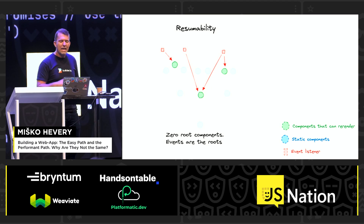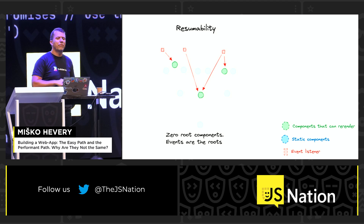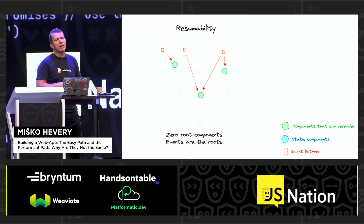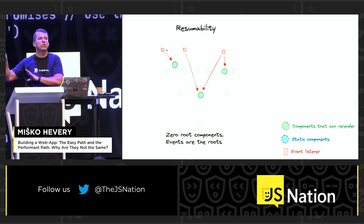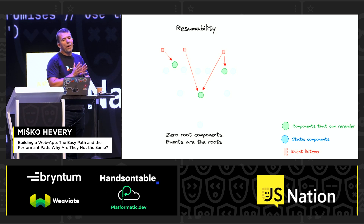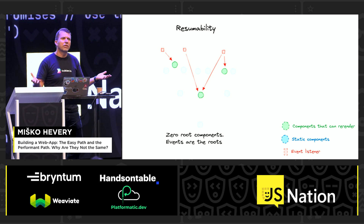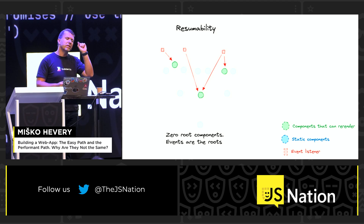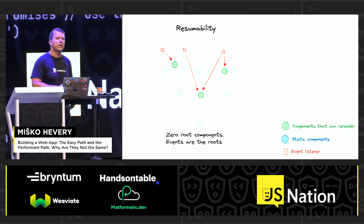This is the bit we call resumability. In the resumable world, instead of starting at the root component and finding all the listeners, you flip it all around and say: you start at the listeners. It's the listeners that matter. Because if there is no listener, then that component is inert — you can't really do anything with it. In this particular example, if I click on this component, I see that only this particular component needs to be re-rendered. The rest of the page doesn't even have to be downloaded. By starting with the listeners rather than from the root, your application automatically breaks up into smaller chunks.